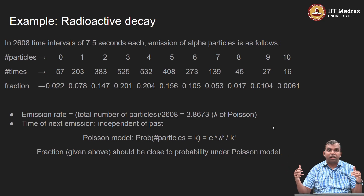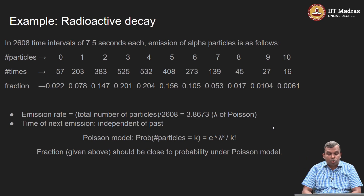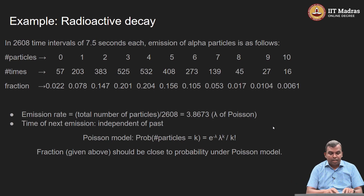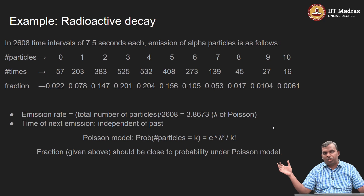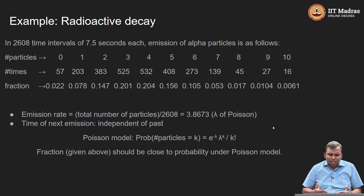We can make a fraction from this data. I take 57 divided by 2608 and get 0.022 — this is like the probability that no particles are emitted in a 7.5-second interval. Then 203 divided by 2608 gives approximately 0.078, which is the probability that one particle is emitted in a 7.5-second interval. This is a reasonable way to estimate probability. The emission rate — the average number of particles emitted — is the total number of particles divided by 2608, and that works out to approximately 3.8673. So per unit time, in some sense, you expect 3.8673 emissions to occur.